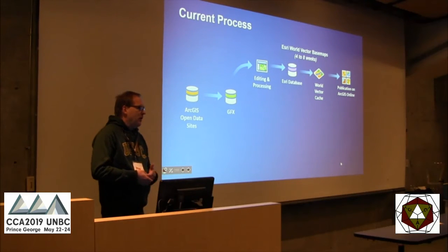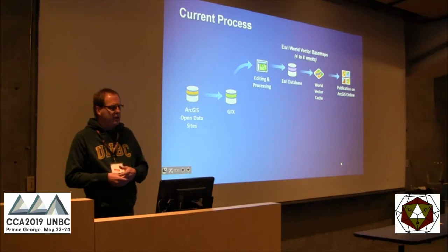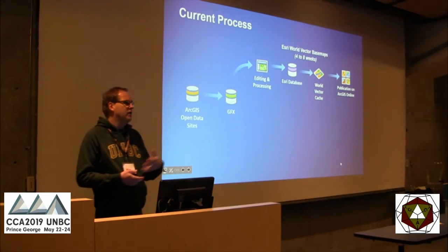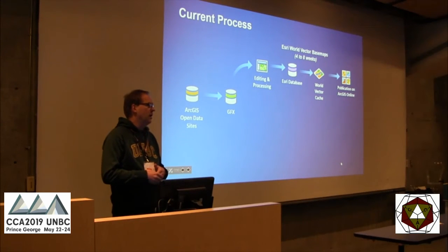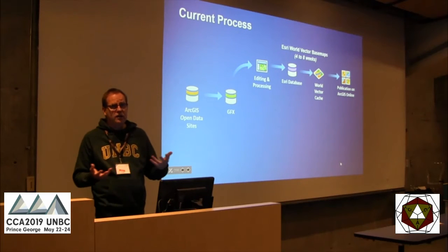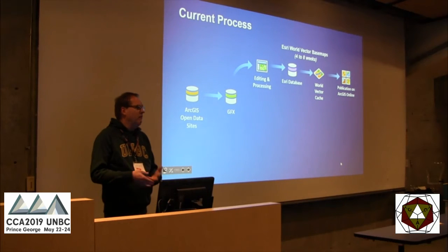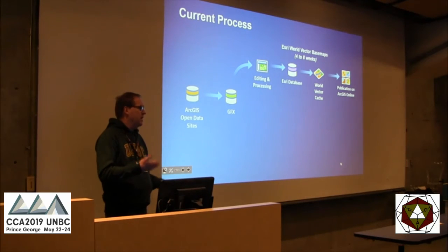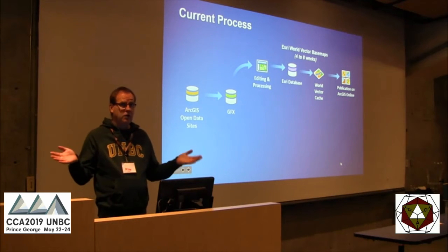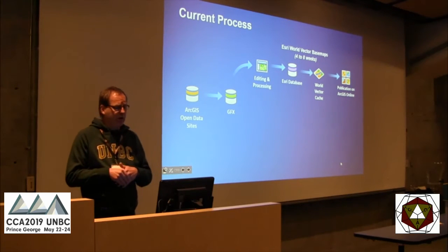When the community maps team is ready to work on a particular community, it can pull that community data out and do some editing and processing. For instance, we will standardize classifications of roads, because neighboring municipalities might have different interpretations of how roads are classed. We look at that and try to standardize it across the country, because we are trying to build a seamless map for the entire country.